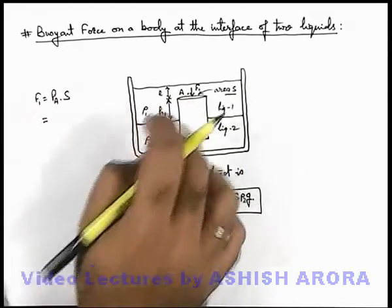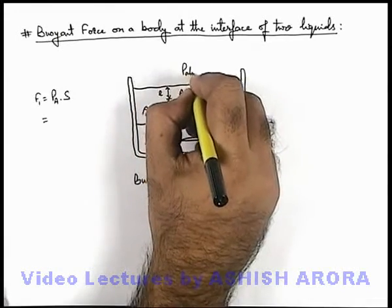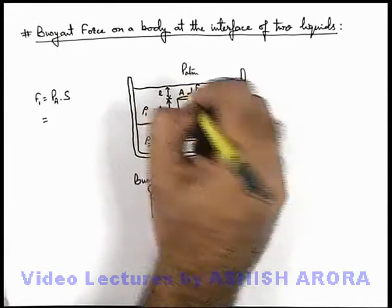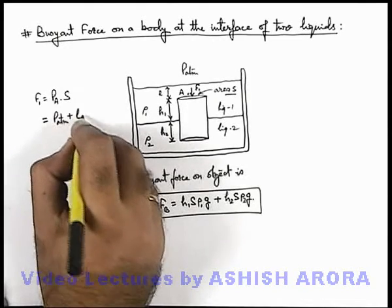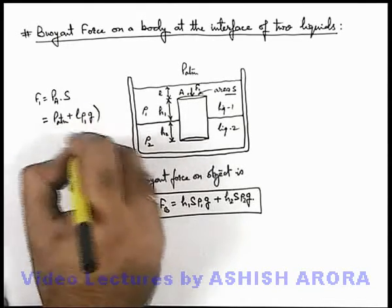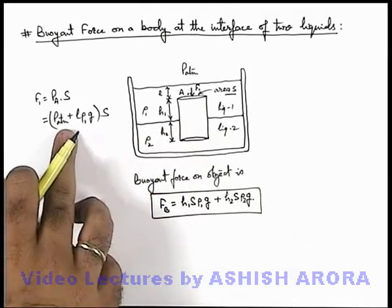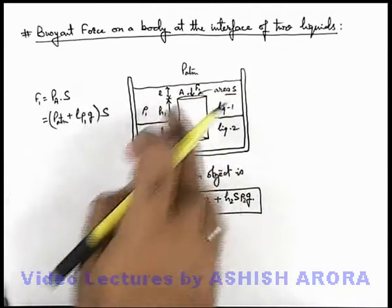And at point A we find out the pressure outside pressure is, say, P atmospheric. So pressure at point A can be written as P atmospheric plus L ρ₁g multiplied by S. This is the net force applied by liquid 1 on the object.